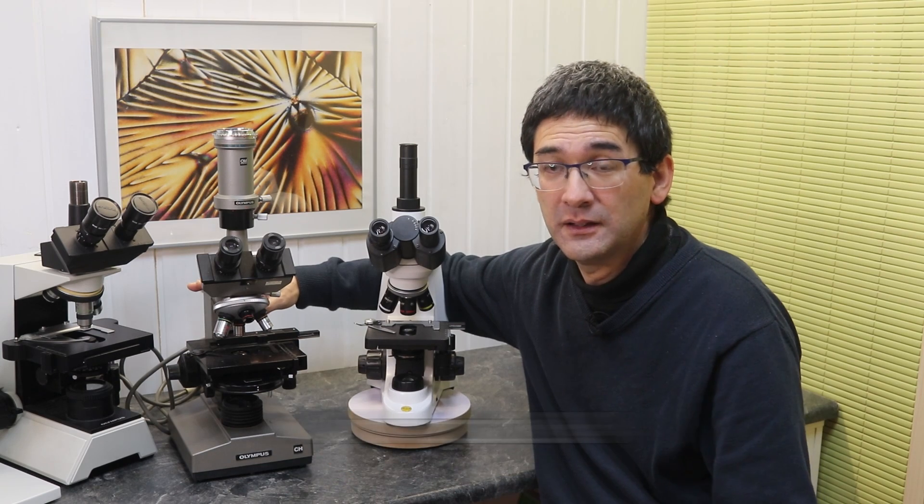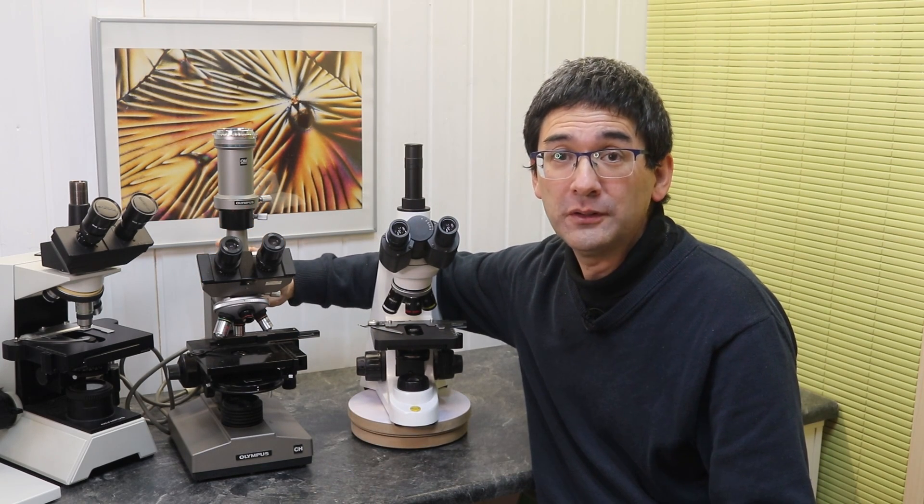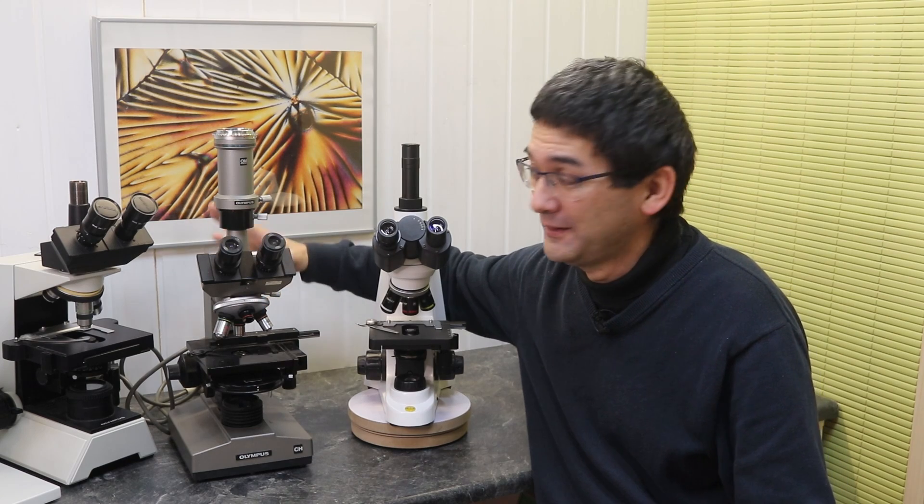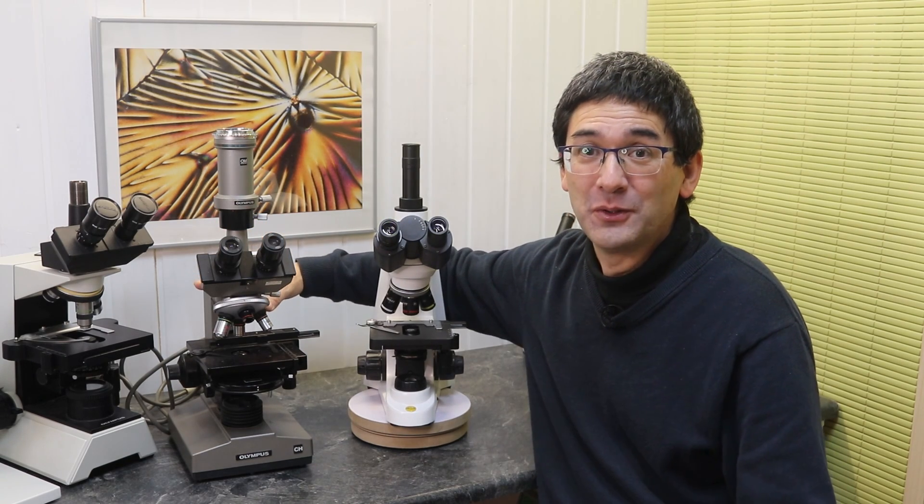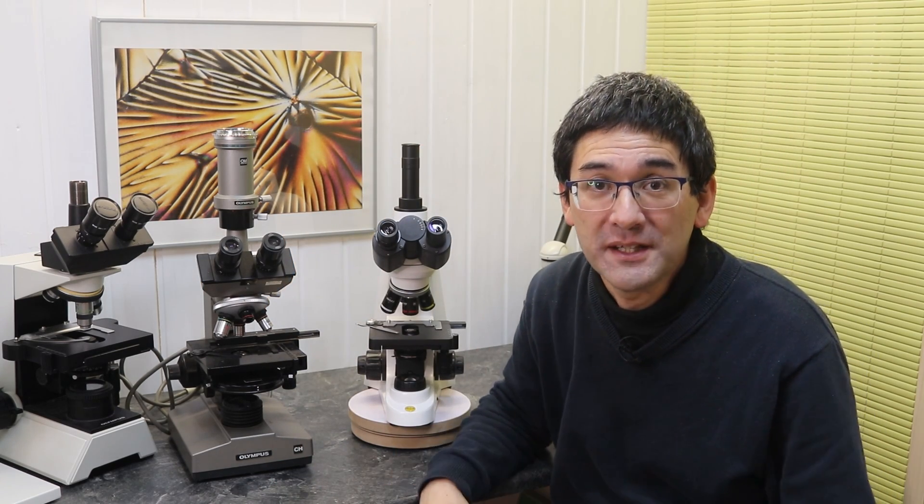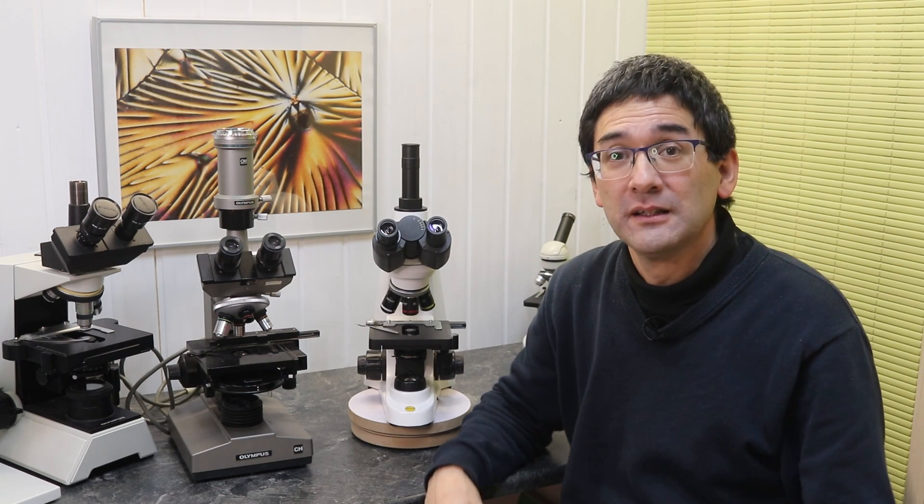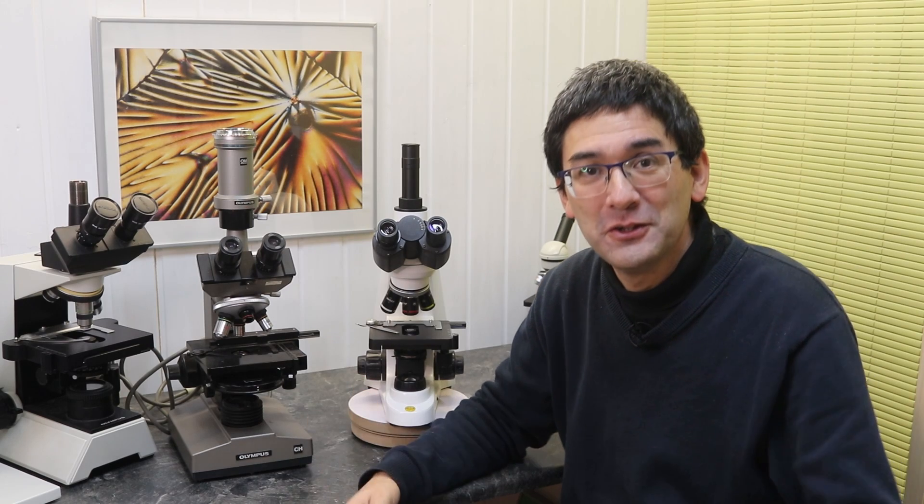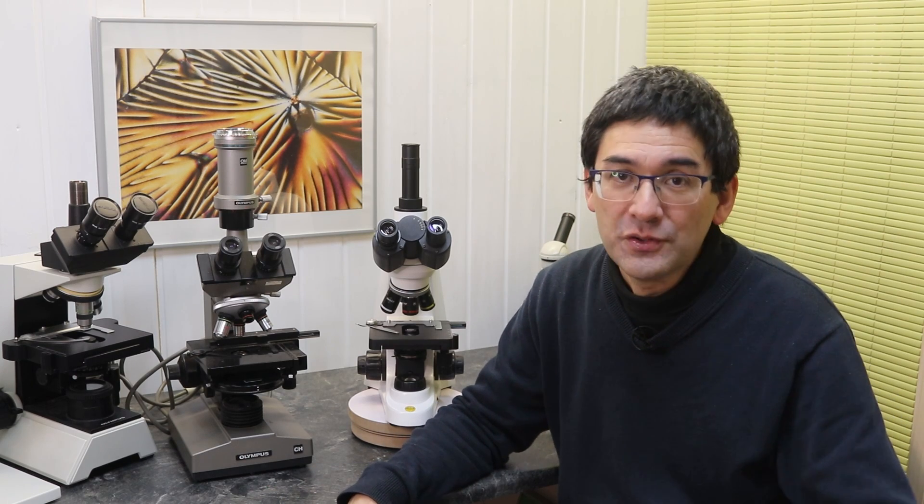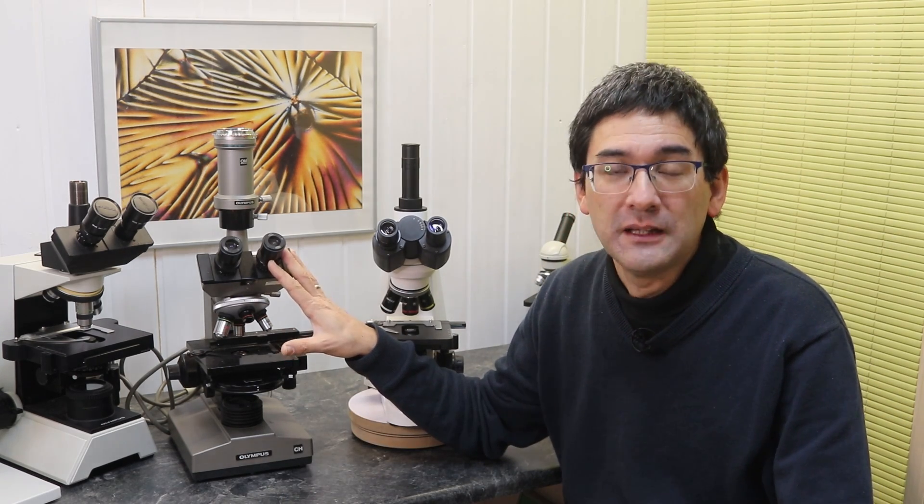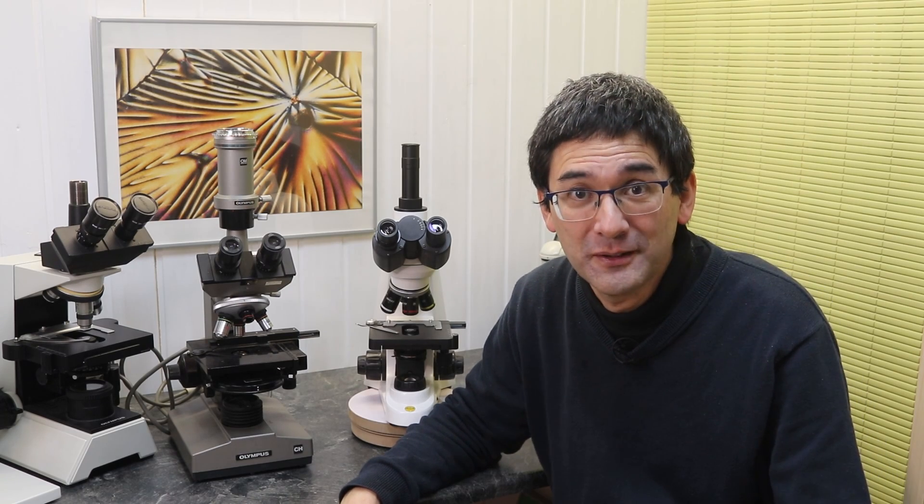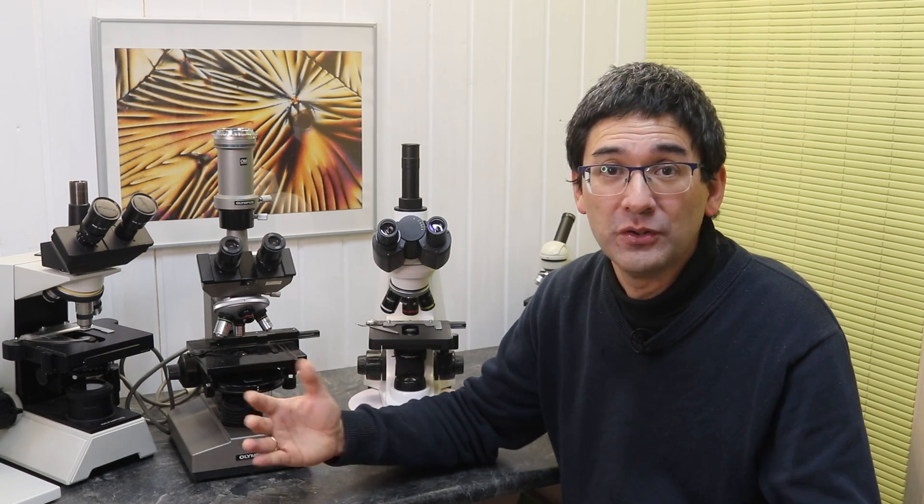Over here, this one is from the 1980s, the Olympus CH microscope model. This is a brand model and even though it's over 40 years old, I had it refurbished by an authorized Olympus service shop and it works just like on day one. So what is the better option now considering that both of them have the same price?